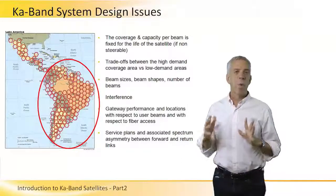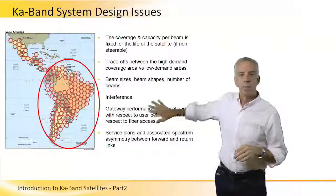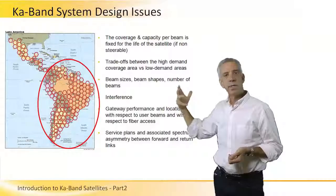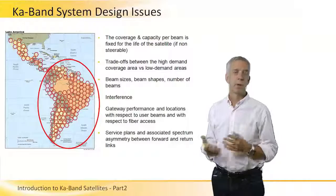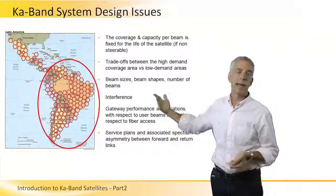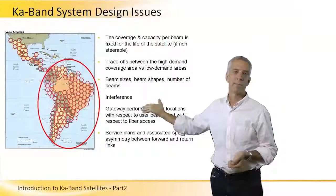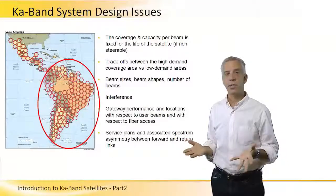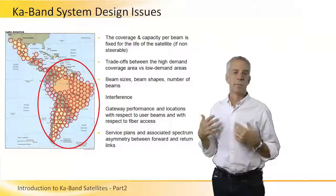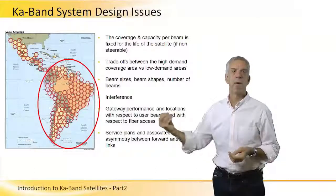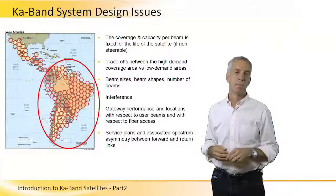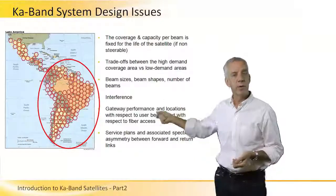Operators also have to decide where to place the gateway stations. User beams determine where user terminals go, and gateway beams determine where gateway stations go. If user beams and gateway beams share the same frequency spectrum, the gateway stations should be placed where there are no user beams. Gateways also need to be placed where there is ready, cost-effective access to lots of fiber, since that provides ingress into the internet or terrestrial network.